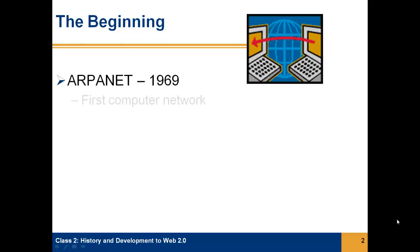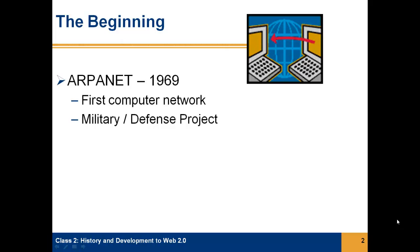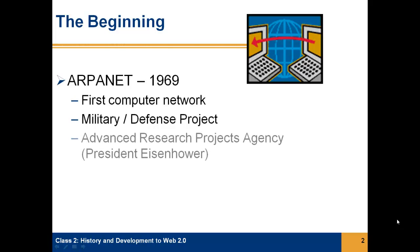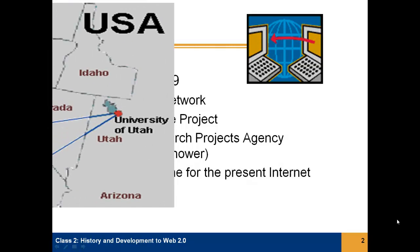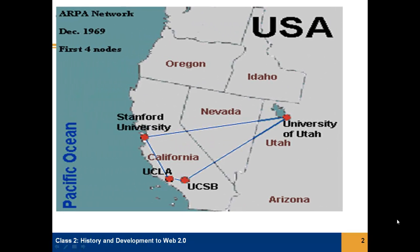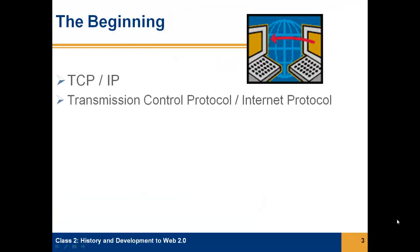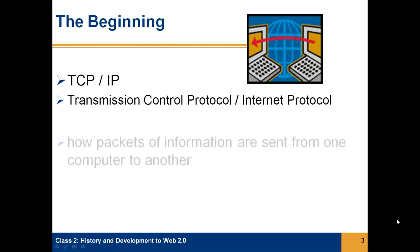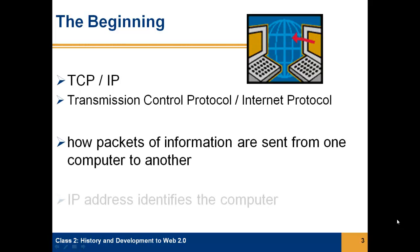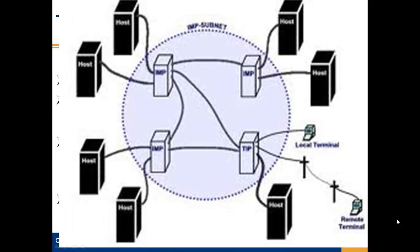The Internet began in 1969 as ARPANET, the first computer network, which started out as a military project under President Eisenhower. It became the backbone for the present Internet. TCP/IP was developed at this time. It tells how the packets of information are sent from one computer to another. The IP address identifies the computer, and this protocol is still used to the present day.